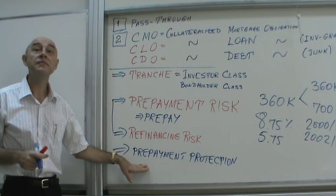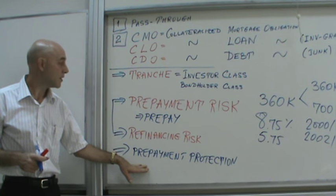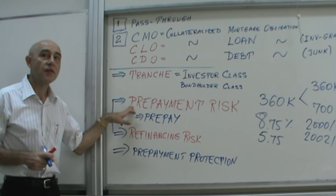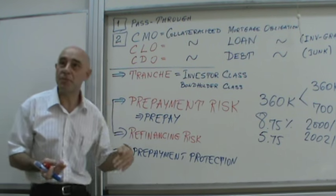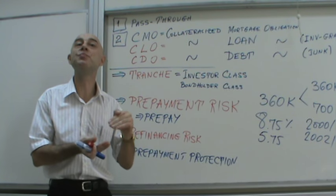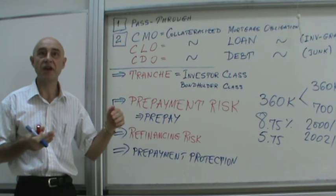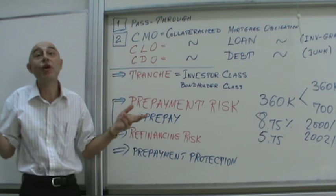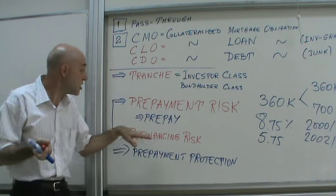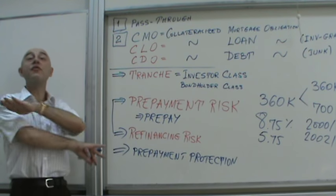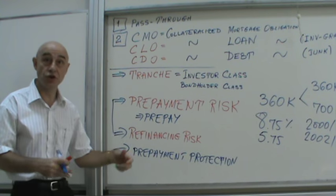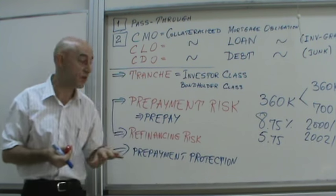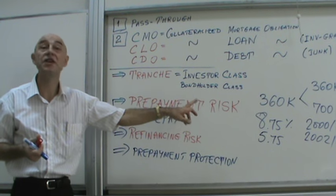A student asks: is prepayment simply paying more than required to the bank — say owing $1,000 and paying a bit extra? Yes, prepayment simply means you pay a little more than you should and it goes against the principal — maybe $50 more, $100 more, or $1,000 more. In refinancing, you pay off the whole loan completely by borrowing a new loan at a lower rate.